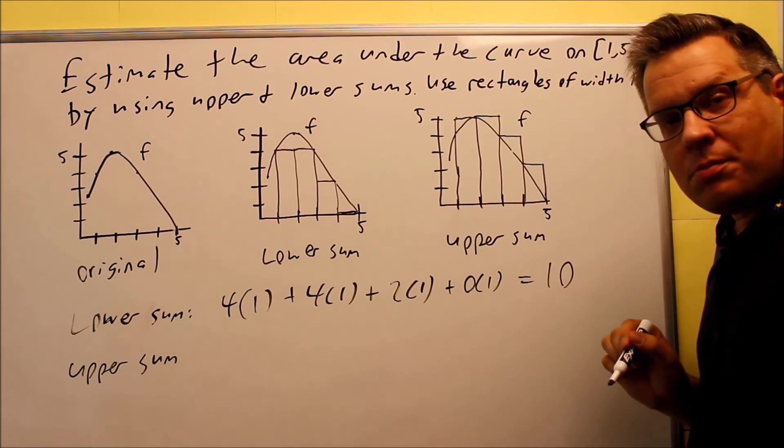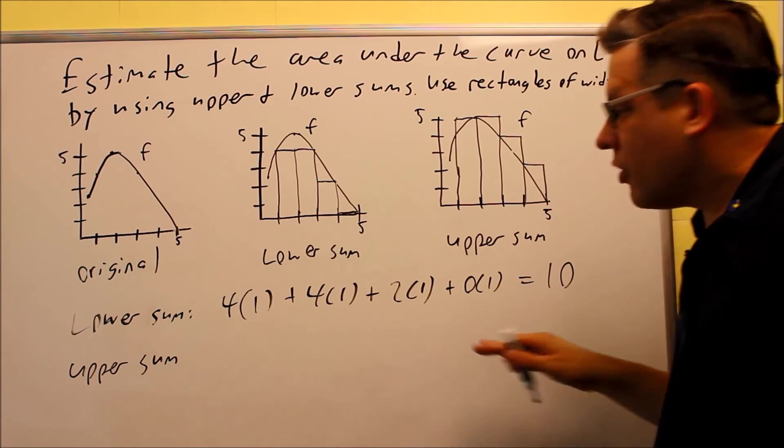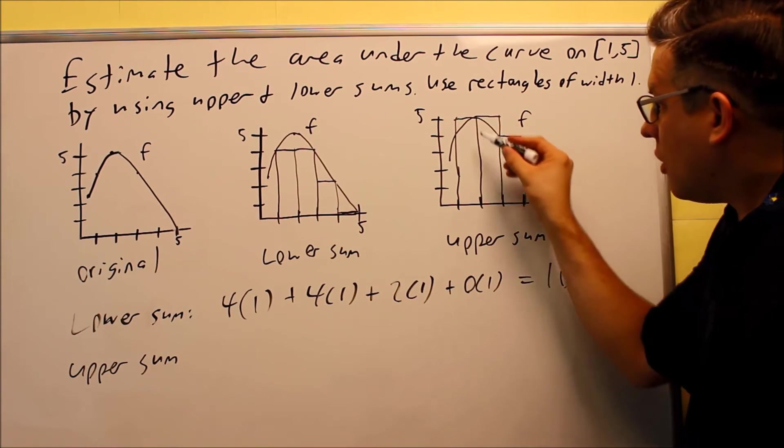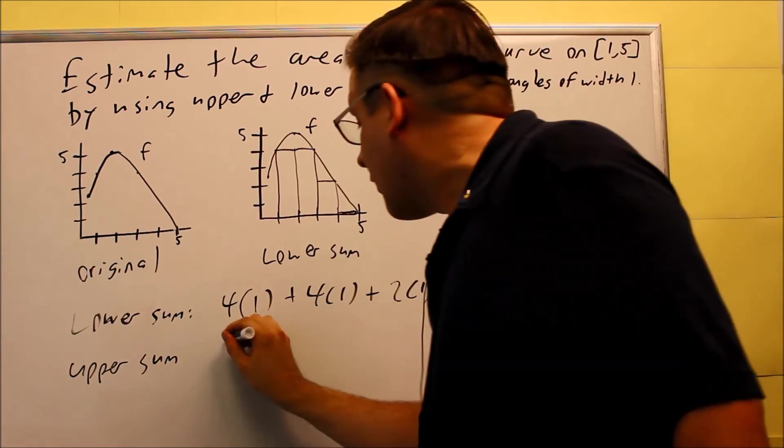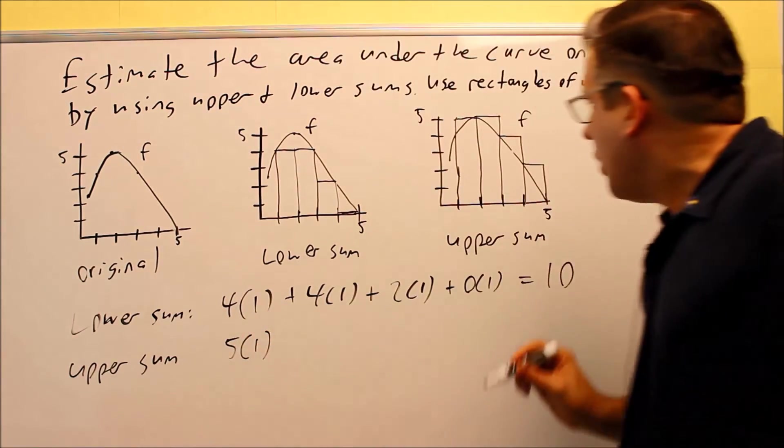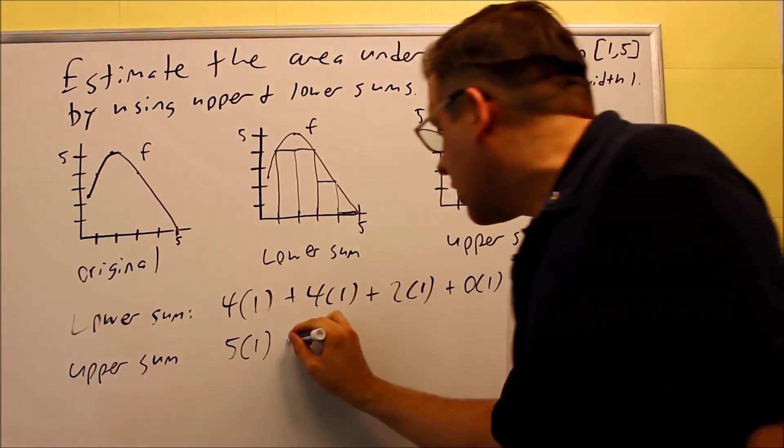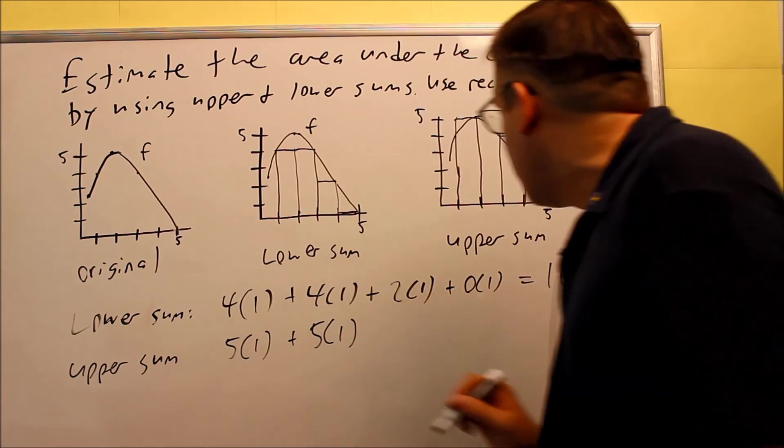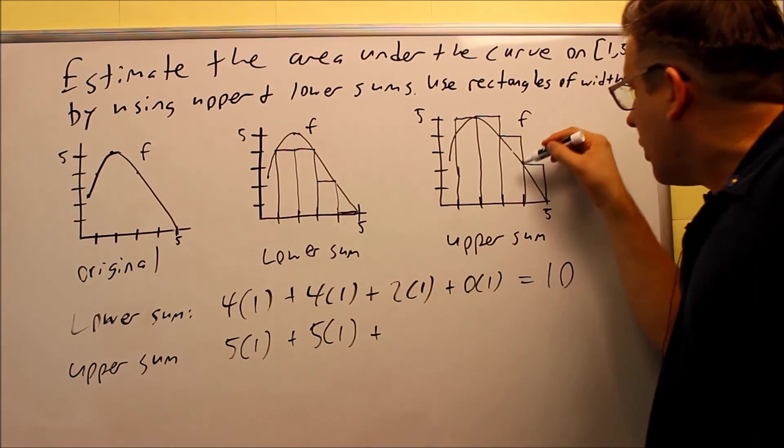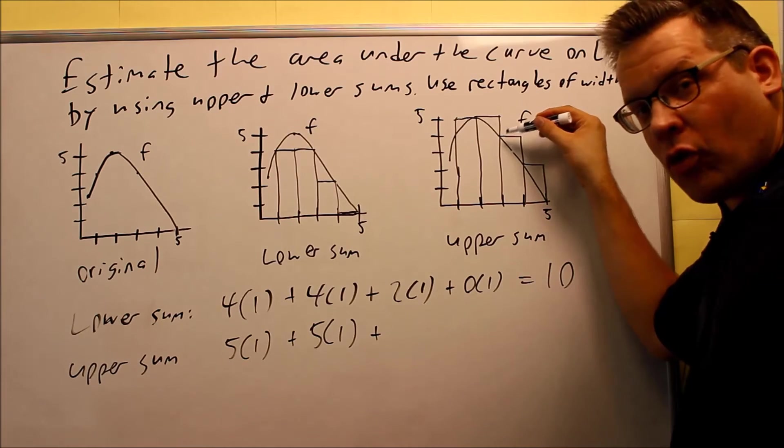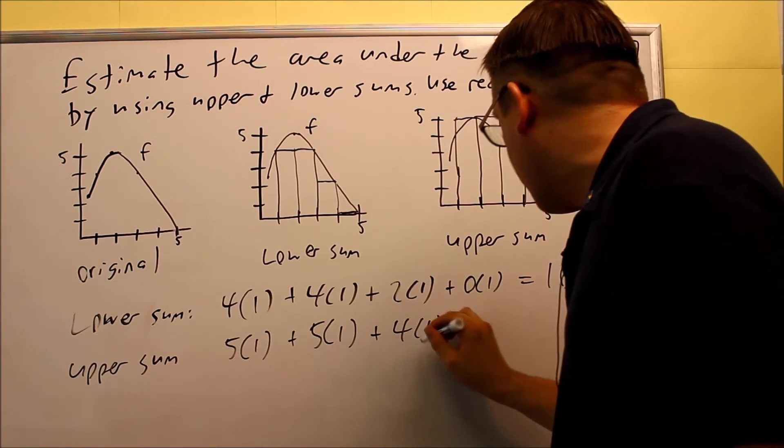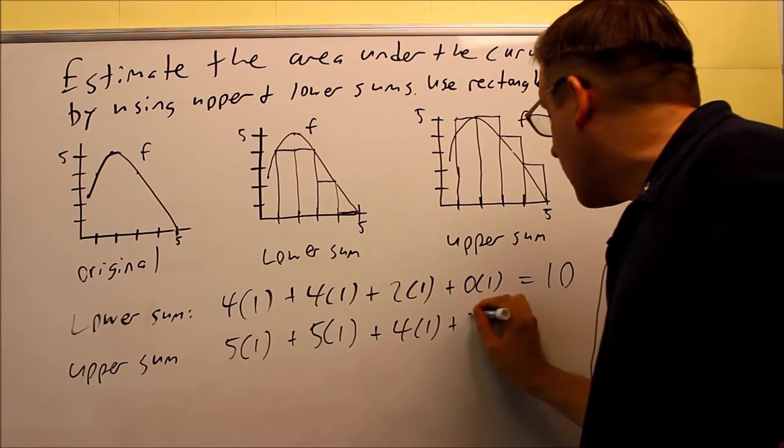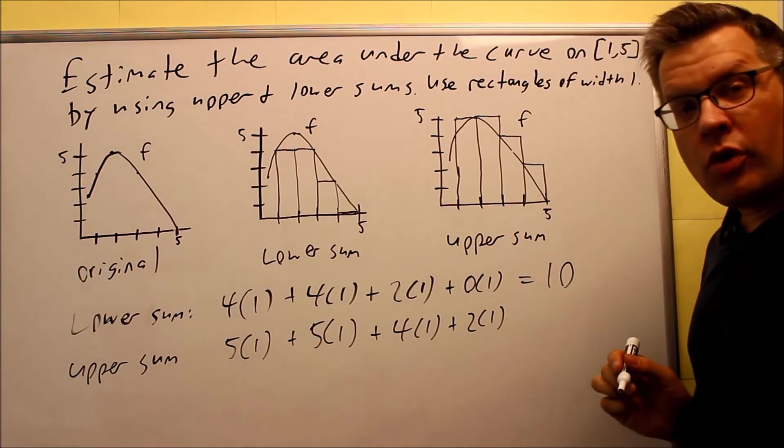Now, that we have it drawn correctly, let's do the math and figure out what the upper sum's got to be. So the first one, we have a height of 5 and a width of 1, and we have another rectangle that has a height of 5, width of 1. And then this one here has a height of 4 and a width of 1. The last one has a height of 2 and a width of 1.